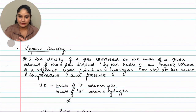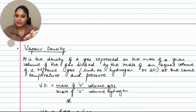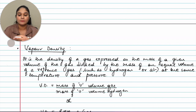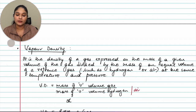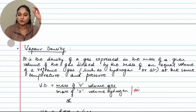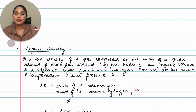Next, we have vapor density. Vapor density is a ratio — when comparing gases, it is the mass of a given volume of the gas you are working with divided by the mass of the same volume of hydrogen or air, depending on what is given in the question.